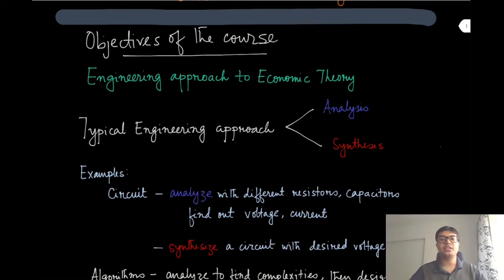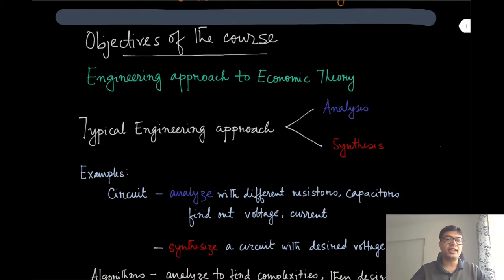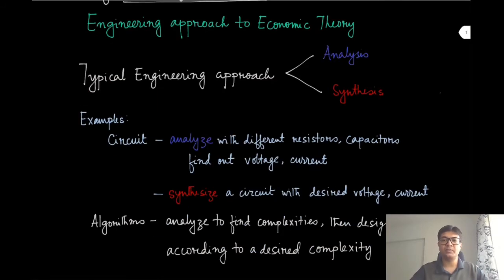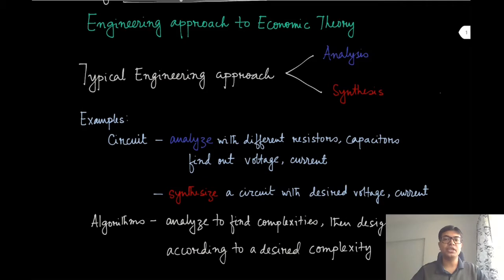So what do we typically do in usual engineering courses? Typical engineering courses always have two components: the analysis component and the synthesis component. Take the classical course of circuit analysis and synthesis — a very popular course in electrical engineering. In the analysis part, you are given resistors and capacitors connected in a circuit, and you are asked to find the voltage or current in different parts of the network. In the synthesis part, you are given the desired voltage or current and must synthesize the circuit using those components.